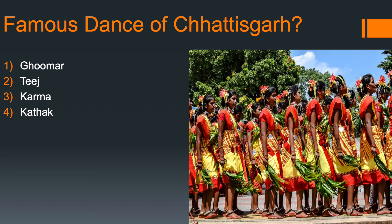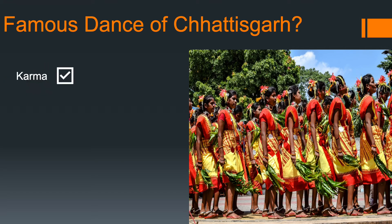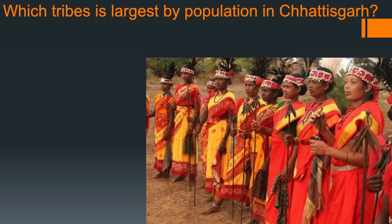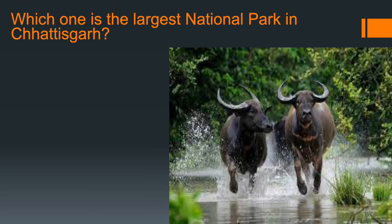Next: what is the famous dance of Chhattisgarh? The correct answer is Karma Dance. Next: which tribe is the largest by population in Chhattisgarh? Answer: Gonds. Gonds are the largest tribe in India as well as in Chhattisgarh by population. Next: which is the largest national park in Chhattisgarh? The correct answer is Indravati National Park.